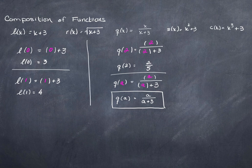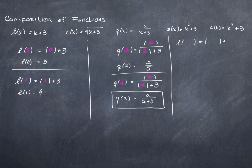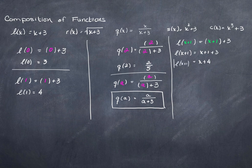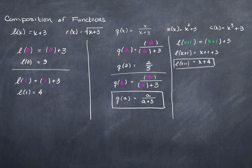It gets really interesting when you plug in a whole new function. Let's go back to L and try L of x plus 1. That means plugging in x plus 1 wherever I used to see an x. L of x plus 1 is x plus 1 plus 3, which simplifies to x plus 4. So when I do this, I have a whole new function. This is what we call composition of functions — I'm composing the function L with another function, y equals x plus 1. That's called a composition, and it gives me a new function.